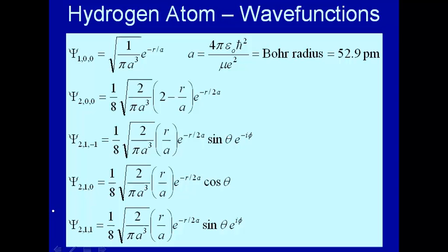Remember the wave function had three quantum numbers associated with it. These are n, l, and m sub l. n can go from 1, 2, 3, and so on up to infinity. l could go from 0 to n minus 1 and m sub l could go from minus l to plus l in integer steps.